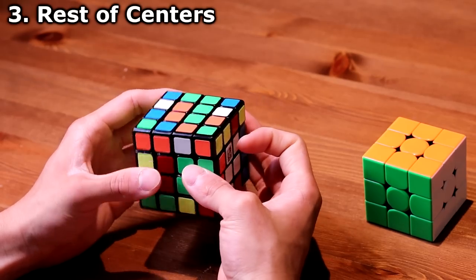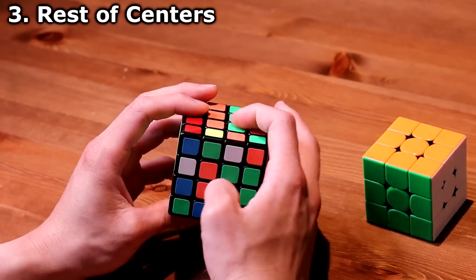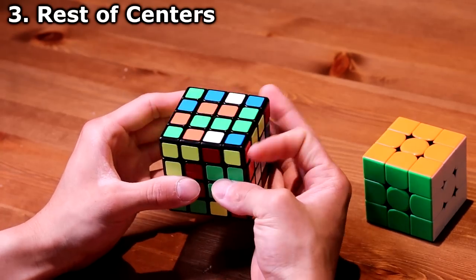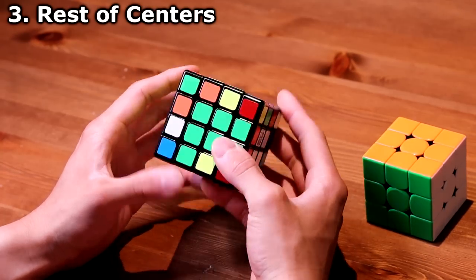Now I can finally bring this 2x1 block green to the green center, and then it automatically solves the last center, which is the orange center.